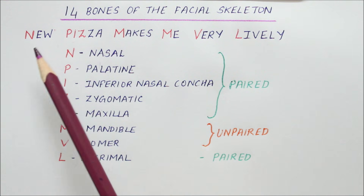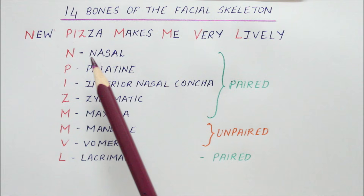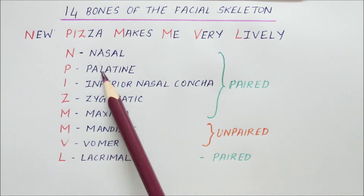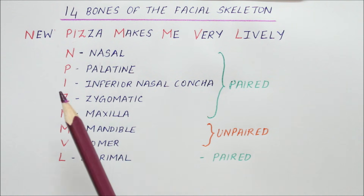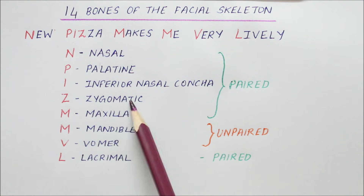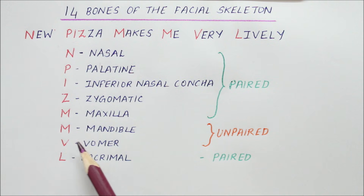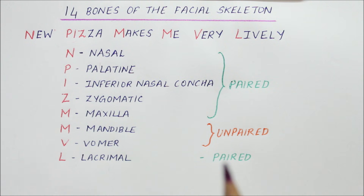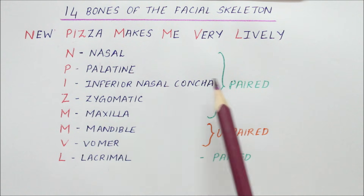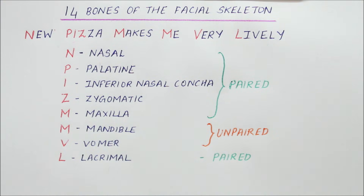To remember the 14 bones of the facial skeleton, we have the mnemonic 'Nupe Pisa makes me very lively.' N stands for nasal bone, P for palatine, I for inferior nasal concha, Z for zygomatic, M for maxilla, M for mandible, V for vomer, and L for lacrimal bone. The first four and the lacrimal bone are the paired bones, while the mandible and the vomer are the unpaired bones.